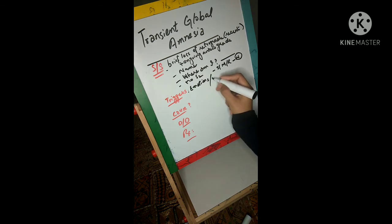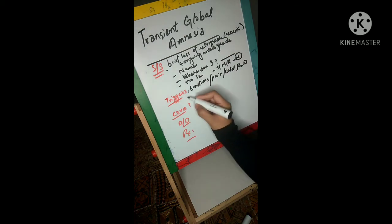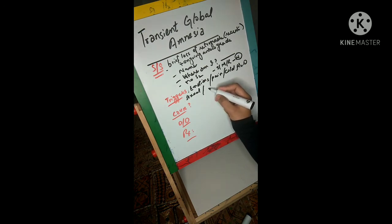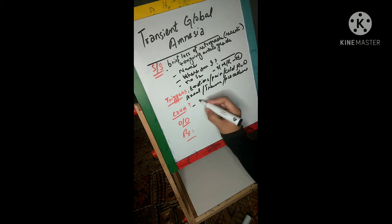Pain, cold water, sexual activity, minor head trauma, or minor diagnostic procedures can also be triggering factors for transient global amnesia. So, to repeat: emotional experiences, pain, cold water, sexual activity, mild head trauma, or minor diagnostic procedures.